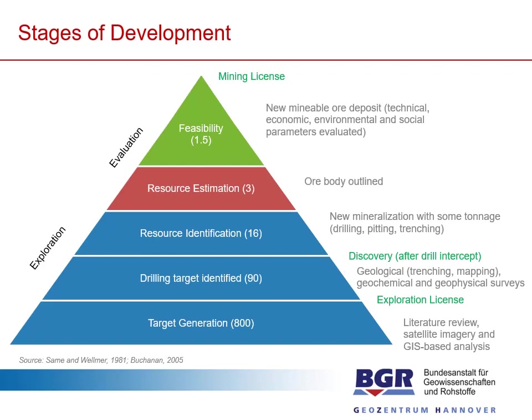Afterwards, during the resource estimation, the ore body is outlined by intensive drilling. But this information only shows you that you have a mineralization with a known tonnage and grade in the ground. An ore body has to be mineable, and to define this, the technical, economic, environmental, and social parameters also have to be evaluated — this is done during a feasibility study. But only if the feasibility study points to a mineable ore body and financing can be assured, then the ore deposit can be mined. This is just one ore body coming from originally around 800 projects in the stage of target generation.